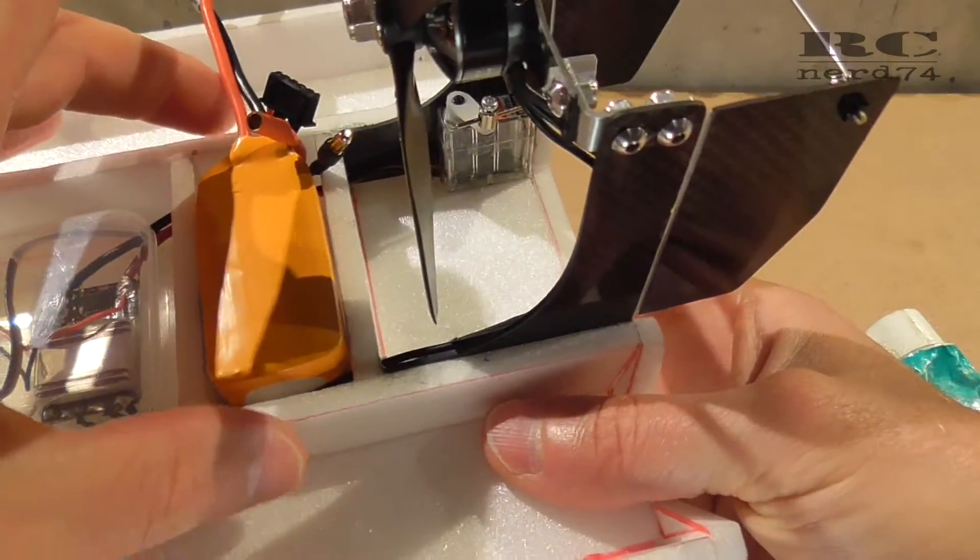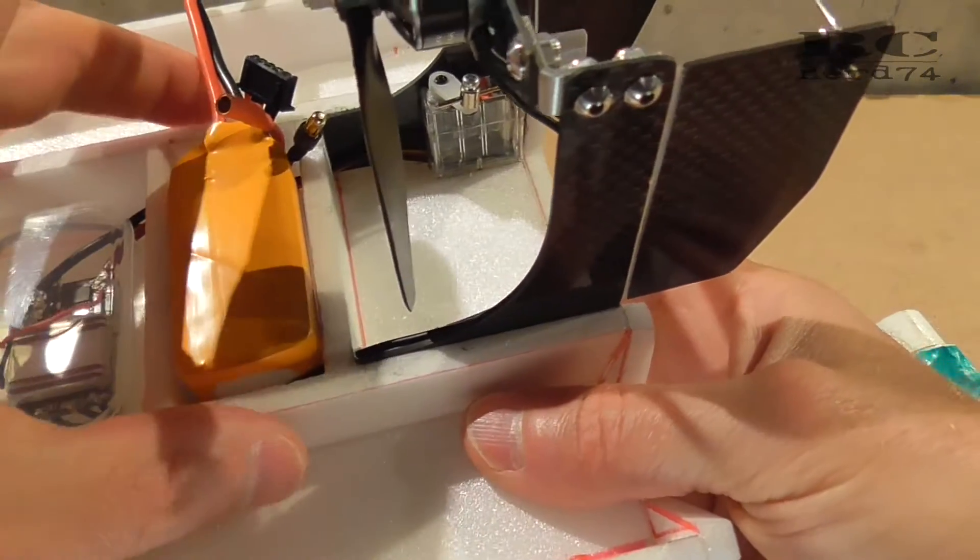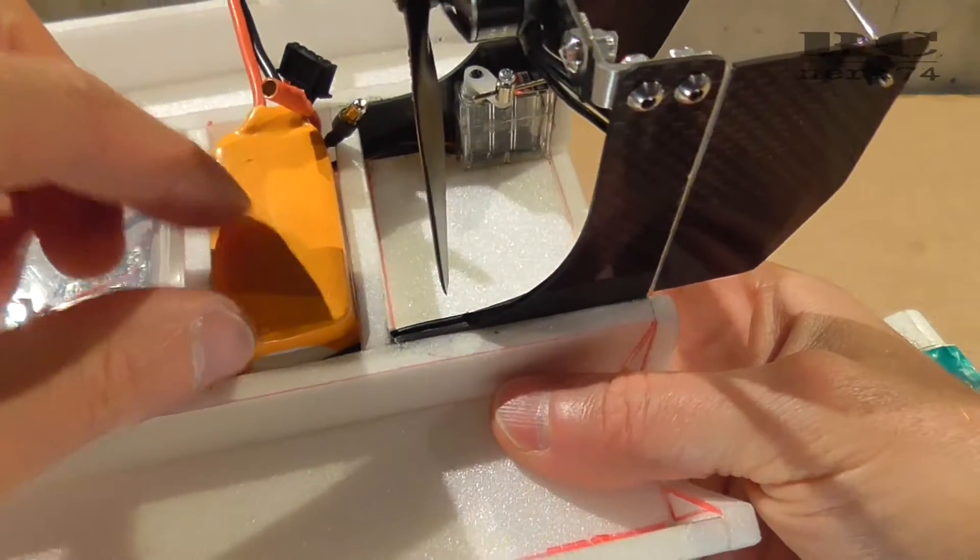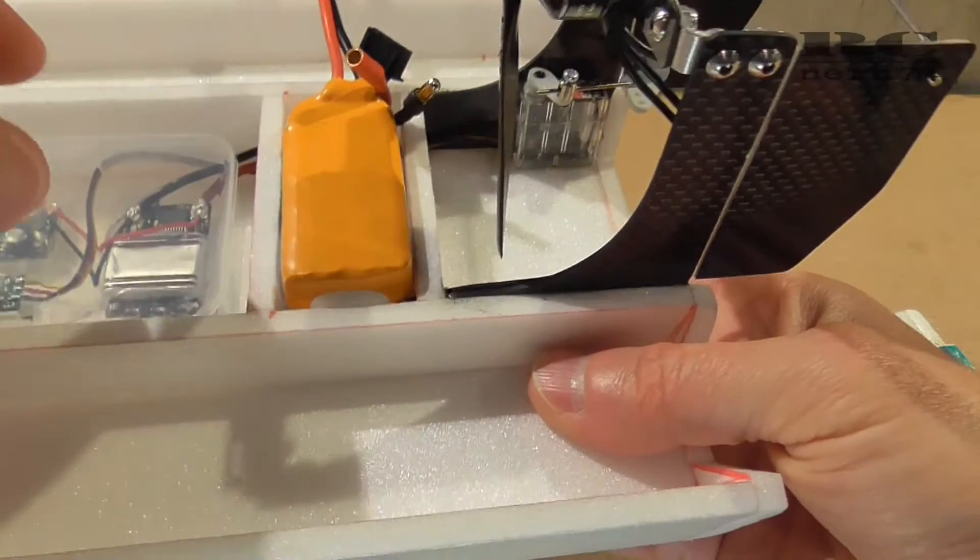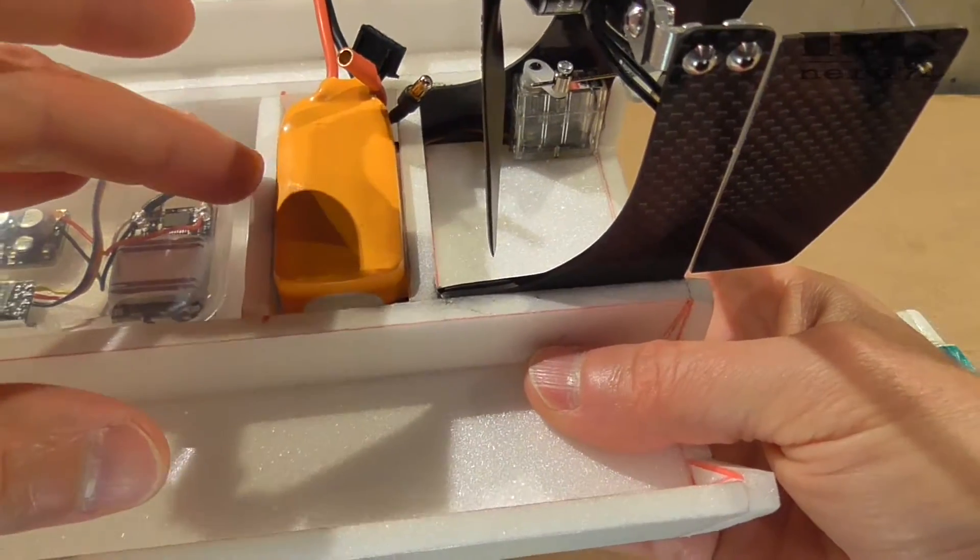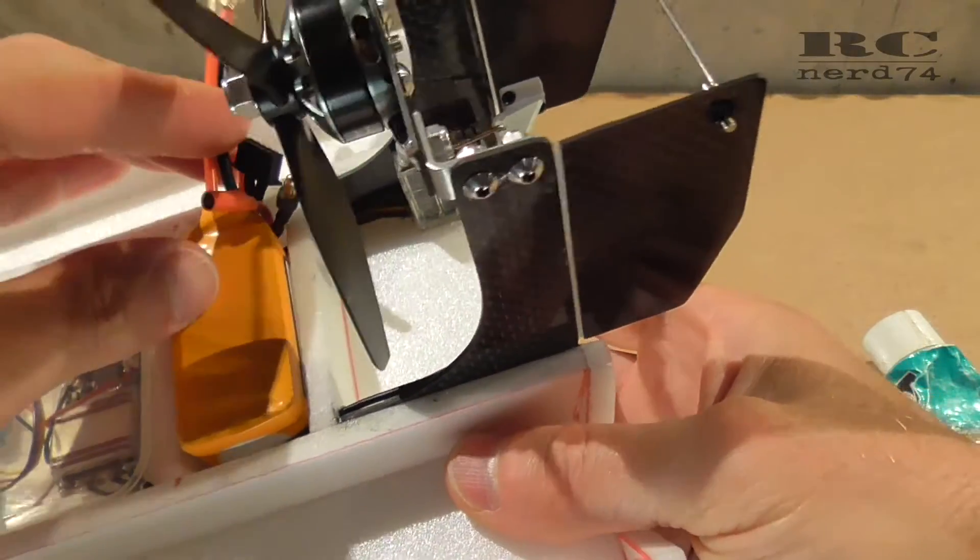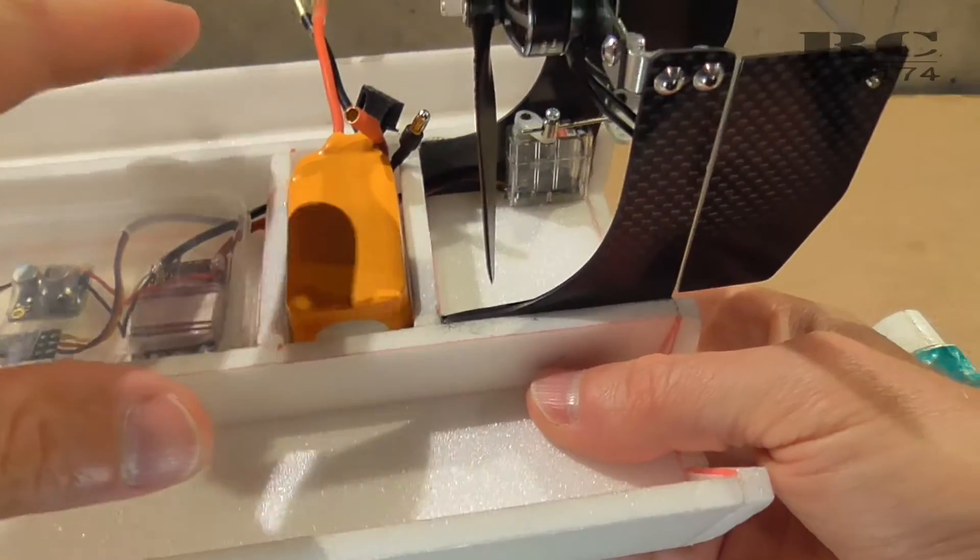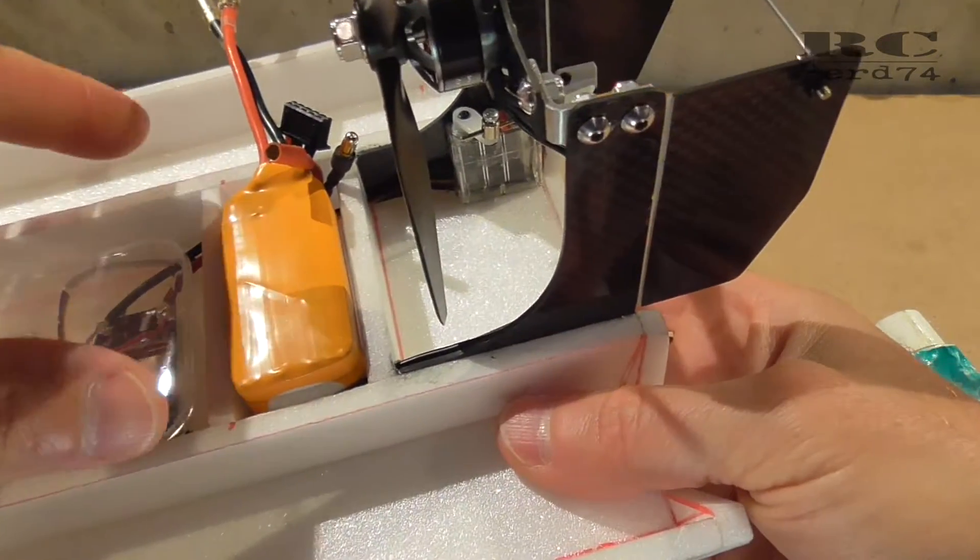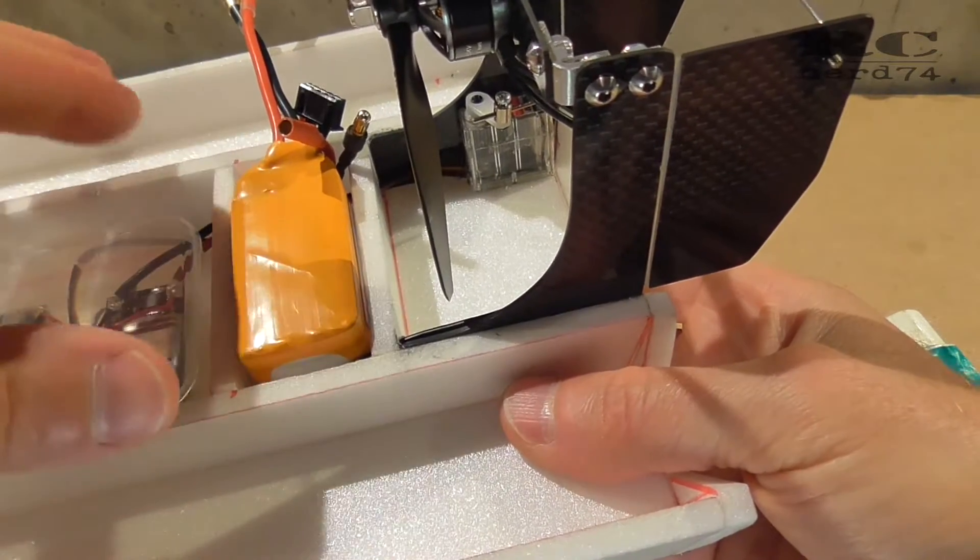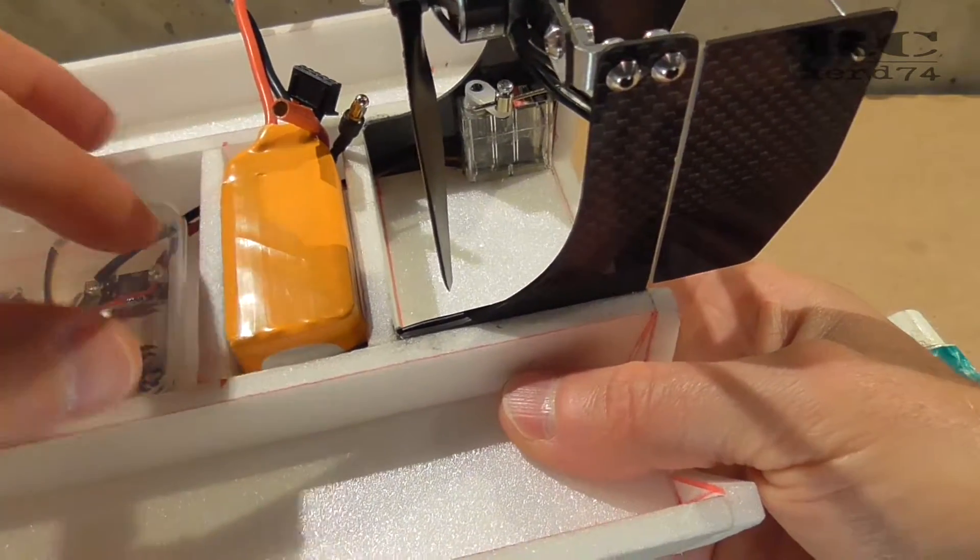Later I will do also something which secures the battery in place also in case of flipping the boat upside down. At the moment it can fall out of the boat but for a first function test that was enough. I just use some tape to fix the battery.